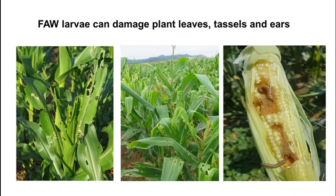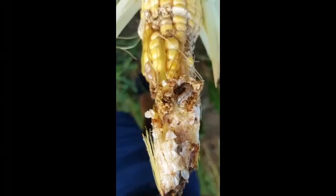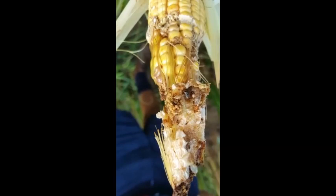Late infestation by stem borers and by fall armyworm usually results in ear damage. In this picture you can see Buseola fusca on a maize ear making similar type of damage that fall armyworm would do. Chemical control under these conditions will not be effective, especially if it is applied by means of aerial application.